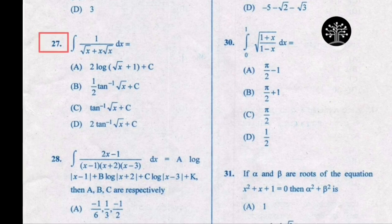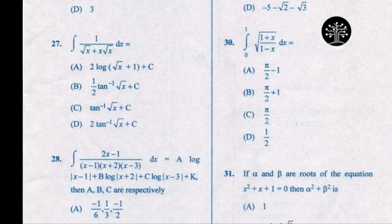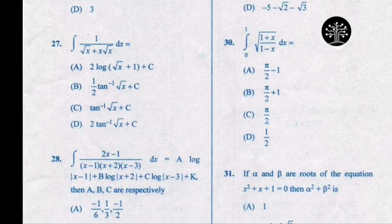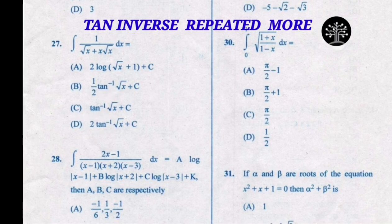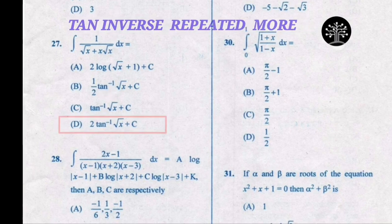In this question, the probability of the correct option being option A or option D — both are having a similar start. Now to decide the correct answer, the term 'tan inverse' is repeated more and is common across options, therefore this supports option D. Therefore the correct answer will be option D.